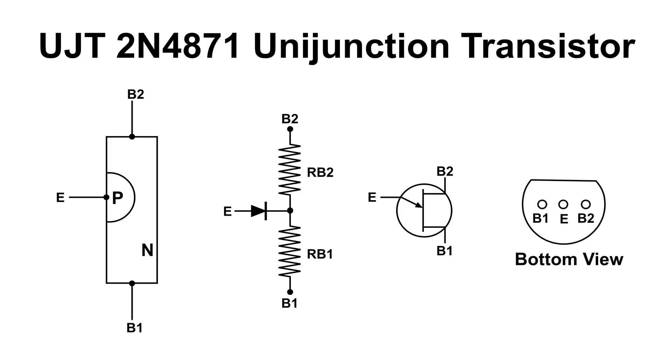And this is the physical bottom view of a unijunction transistor. The B1 connection is all the way to the left, E is in the center, and the B2 connection is on the right.